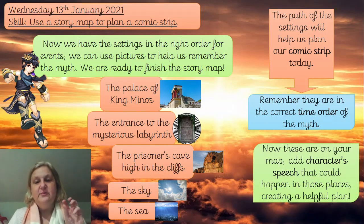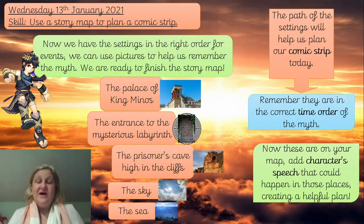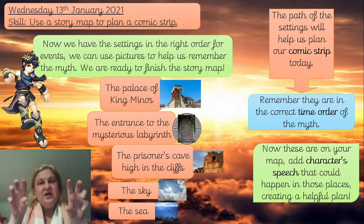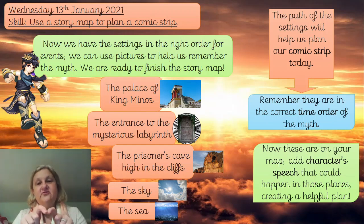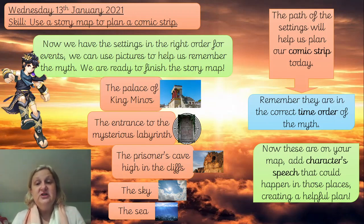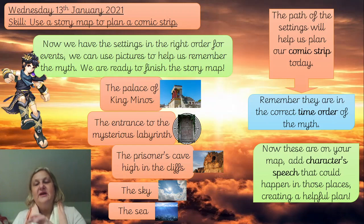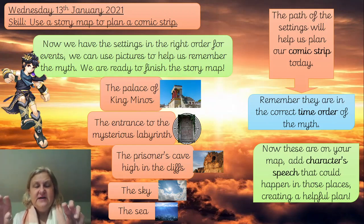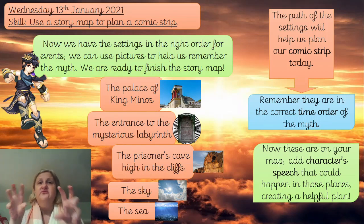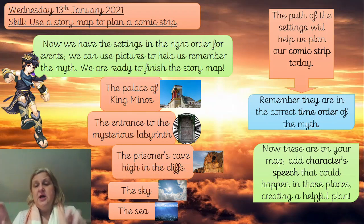Once these are on your map you can add some character speech — use your inverted commas, but don't forget that in the picture area of your comic you can put speech bubbles instead. If you're writing at the bottom where you're putting the actual story text, you will need to use inverted commas. You don't want too much speech — save it for the really important key moments, like the warning that Icarus shouldn't go too close to the sun. That would make a really powerful speech bubble.